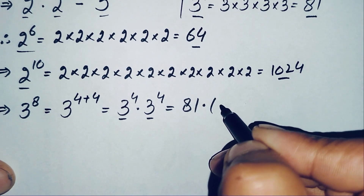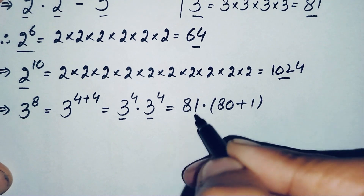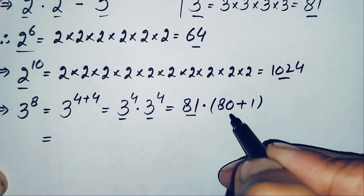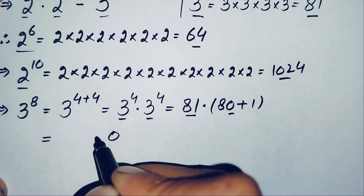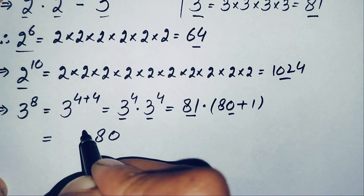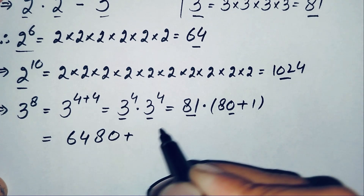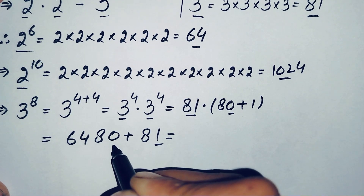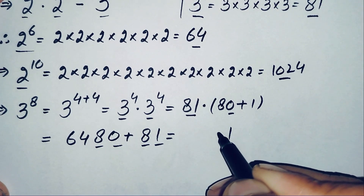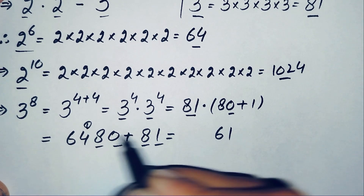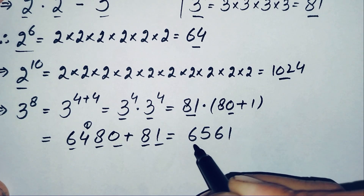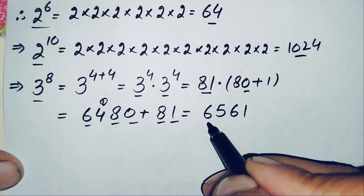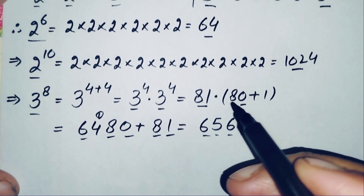We write 81 as 80 plus 1 to multiply easily: 81×80 gives 6480, and 81×1 is 81. Adding these: 6480 plus 81. Ones: 1+0=1; tens: 8+8=16, write 6 carry 1; hundreds: 4+1+1=6; thousands: 6. This gives us 6561. So the value of 3 raised to power 8 is 6561.